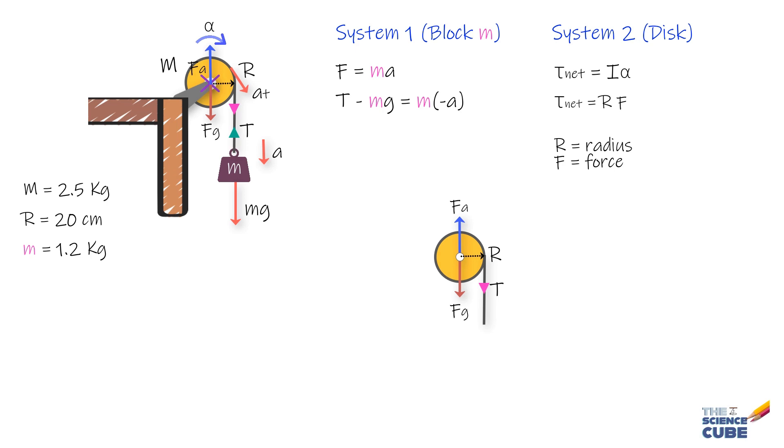So we can say that the torque due to this force is minus RT. And why minus? Simply because this torque is rotating the disc clockwise, and per our sign convention, we should take it as negative.